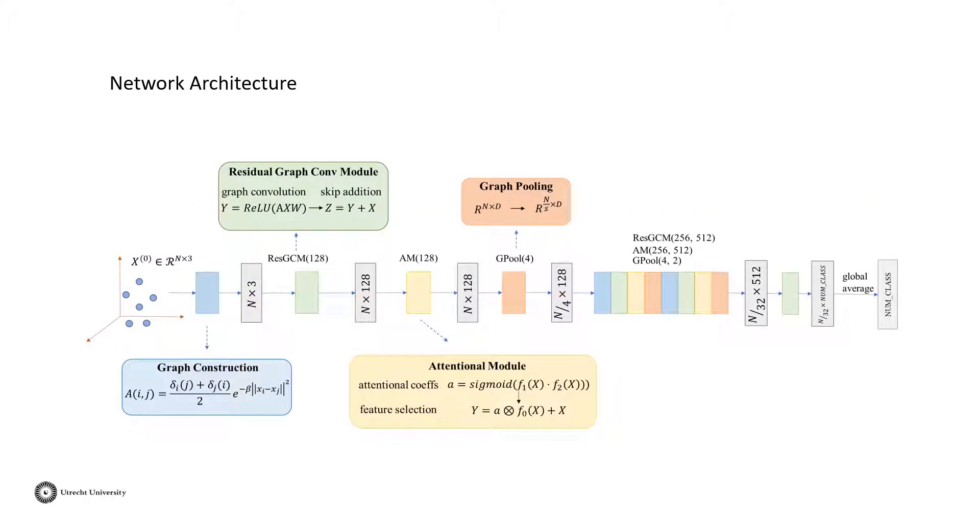Our proposed ResGCN has three main components: the residual graph convolution module, the attention module, and the graph pooling. I'd like to explain the three modules in detail.